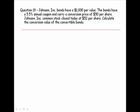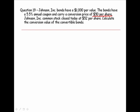Johnson Incorporated bonds have a $1,000 par value. These bonds have a 5.5% annual coupon and a conversion price of $50 per share. Johnson Incorporated common stock closed today at $52 per share. Calculate the conversion value of the convertible bonds.